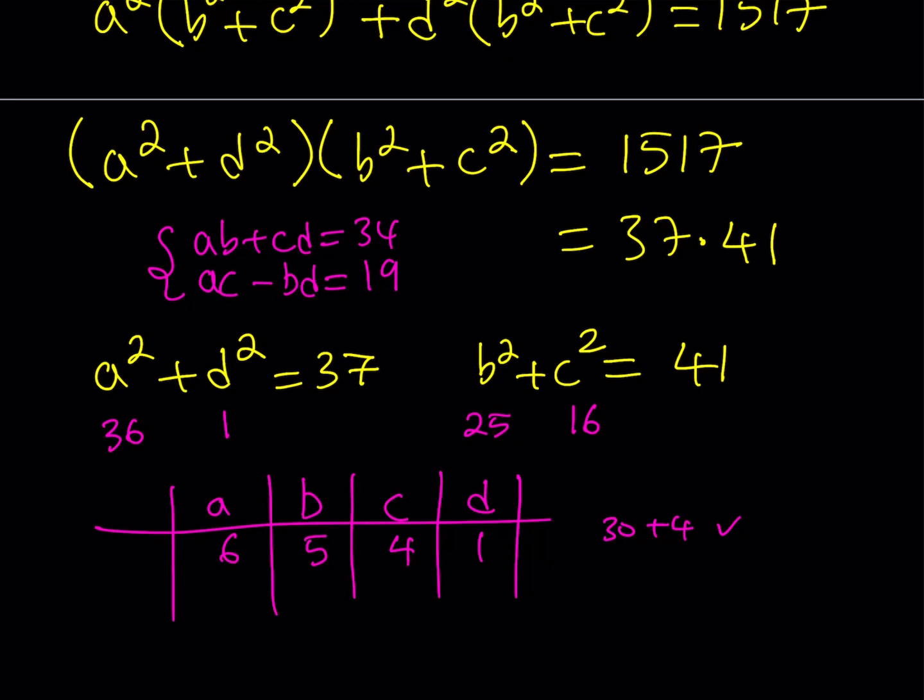What about the second equation? AC, which is 6 times 4, which is 24, minus BD, which is 5, that's 19. So this quadruple actually works. This quadruple works. Okay, cool.